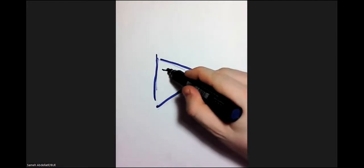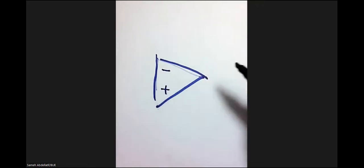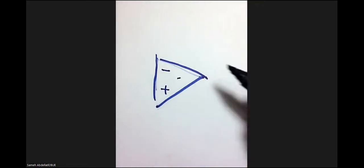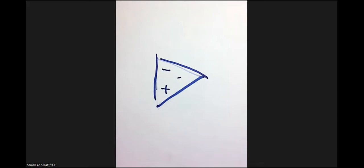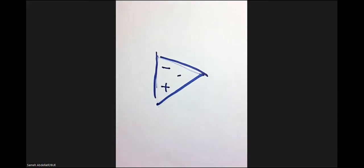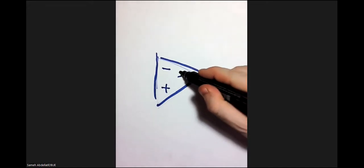We have here an inverting input, a non-inverting input, and here we have the output. In this case, we define the term called an ideal operational amplifier. An ideal operational amplifier is an operational amplifier with an open-loop gain equal to infinity, input resistance equal to infinity, and output resistance equal to zero.